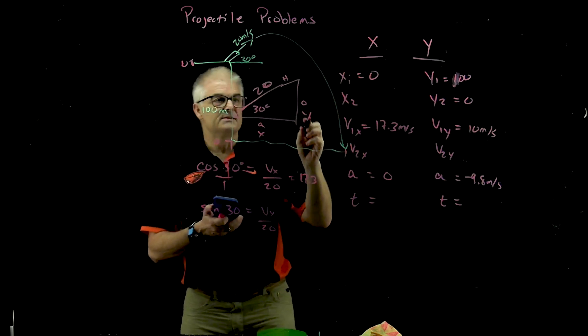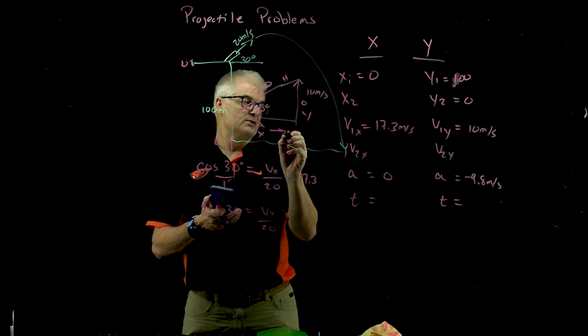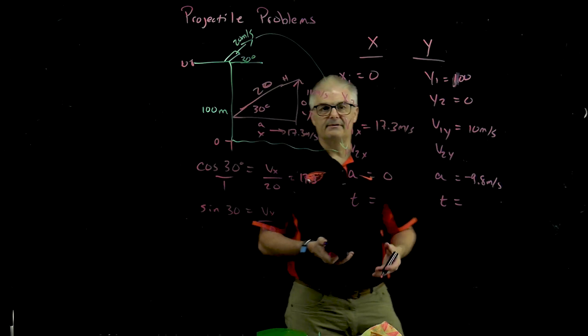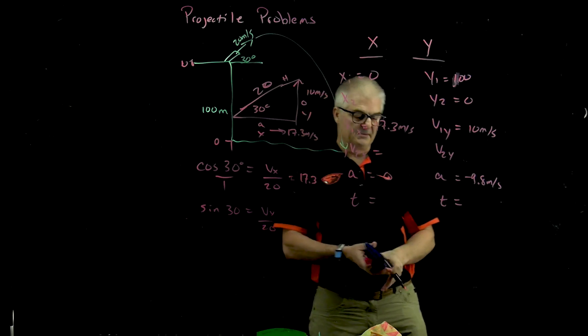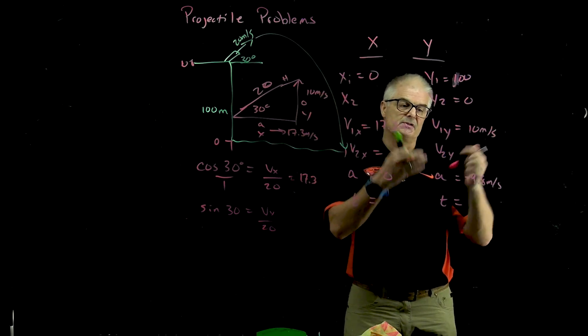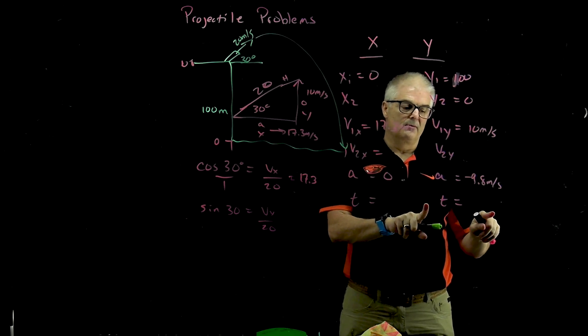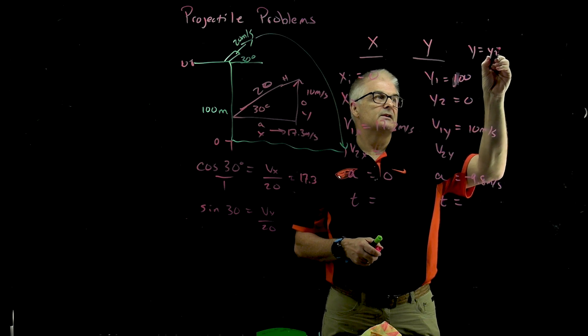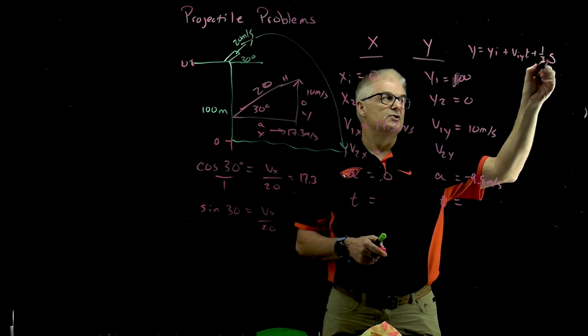That means it's traveling upwards at 10 meters per second initially and in the x direction it's traveling at 17.3 meters per second. Now we want to fill in the gap—find what the final velocities are, what the time is. We're gonna use the same equation. We can find time because we know y1, y2, viy, and a, and we're going to solve for time.